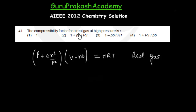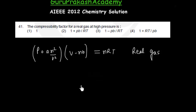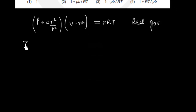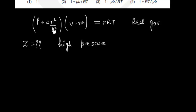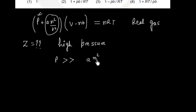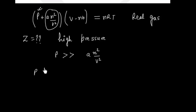We have to find the compressibility factor Z for a real gas at high pressure. At high pressure, we can neglect the term an²/V² because P is much greater than an²/V². So the equation simplifies to P(V − nb) = nRT.